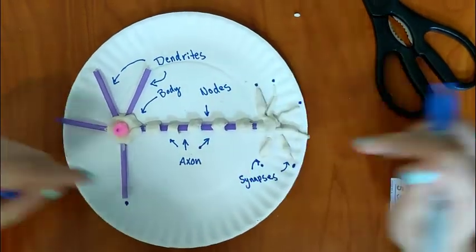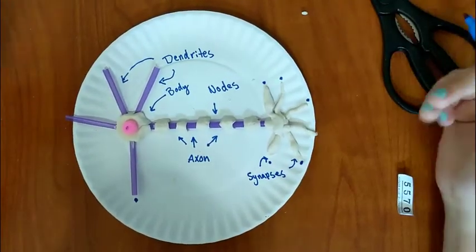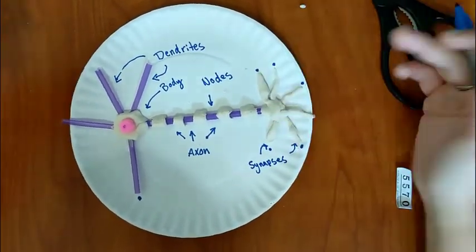And those are exactly where it connects to dendrites on other cells. So in between here and here on other cells, that is where the signal crosses. And this is a neuron.